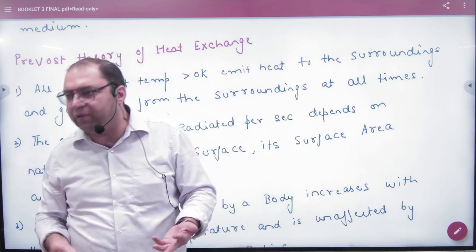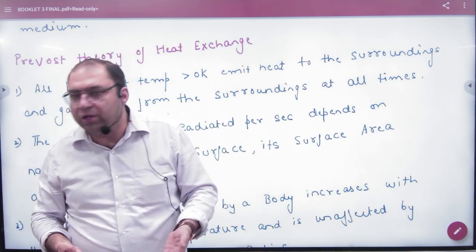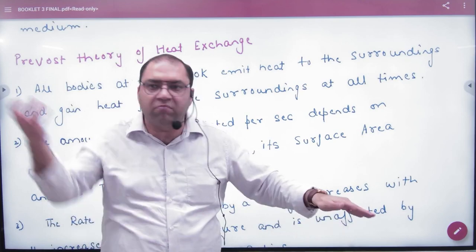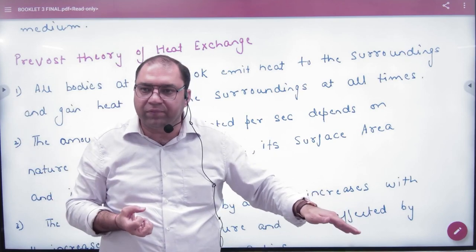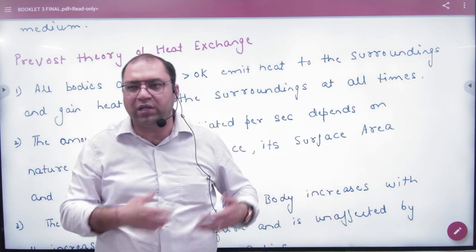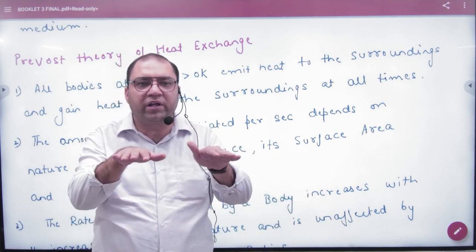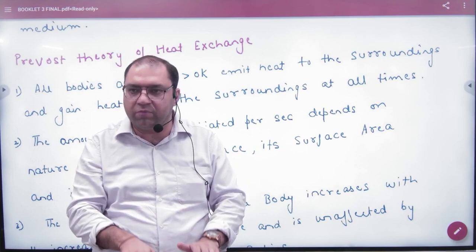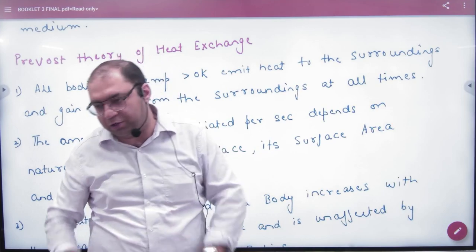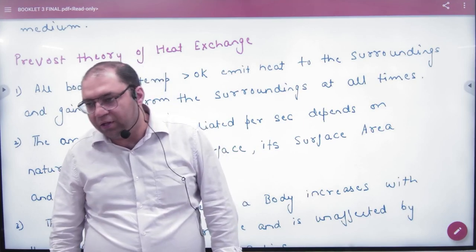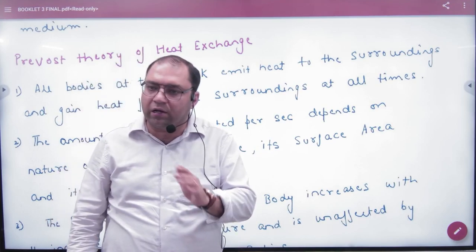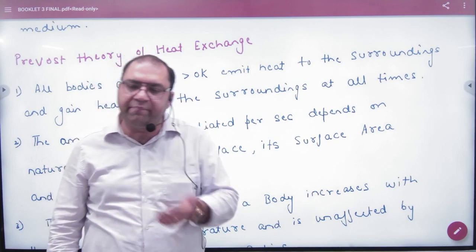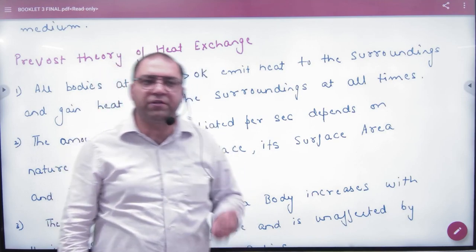Something is continuously getting out of my body. The rate of release is greater than the rate of absorption. So if I am giving out heat from my body, my body will start getting cold, until it reaches the same temperature as the surroundings. This explains the Prevost theory.